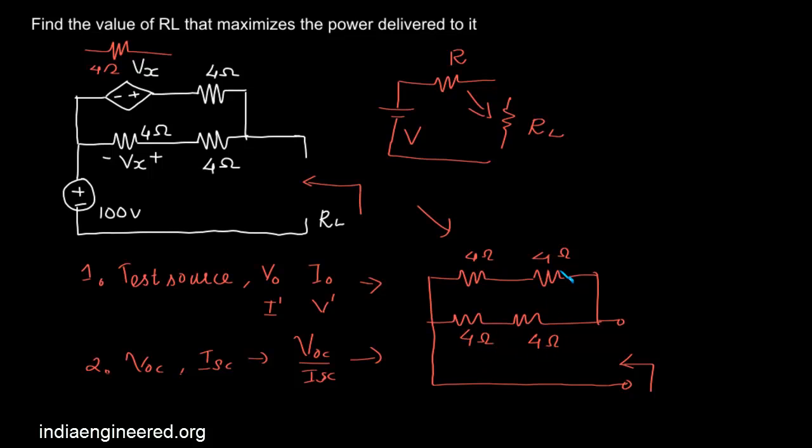That means we have 8 ohm here. 4 ohm plus 4 ohm, that is 8 ohm. 8 ohm parallel with 8 ohm, that is 4 ohms. So the value of RL that maximizes the power delivered to it will be 4 ohms.